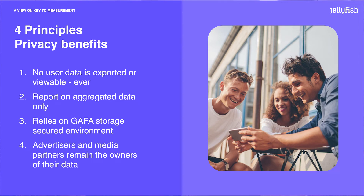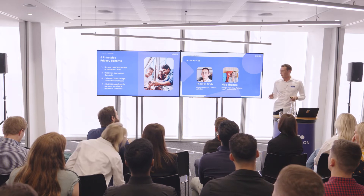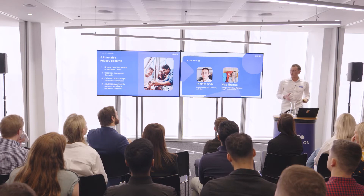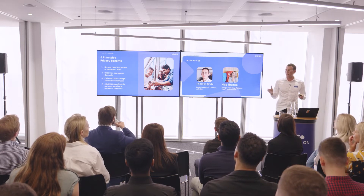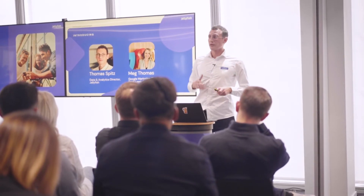We have here four main principles when we talk about privacy, and there are four key benefits with data clean rooms. First, there is no user data which is exported or visible outside of the platform. Secondly, all reports are aggregated and we do not have access to raw data. Third, the infrastructure itself relies on the GAFA secure environment — Google is relying on Google Cloud Platform and Amazon is relying on AWS, so it's really secure. And the first point is that advertisers or media partners will always remain owners of their data.